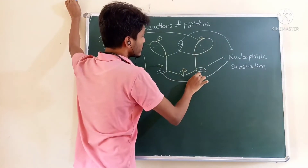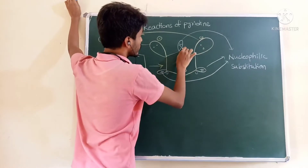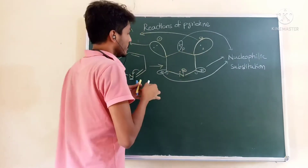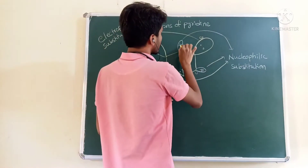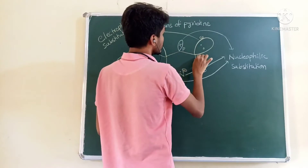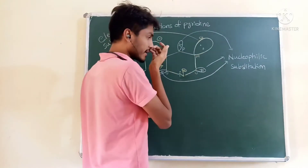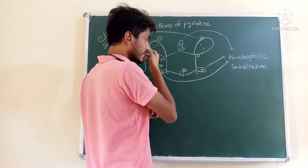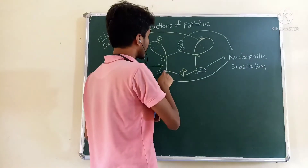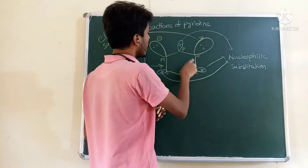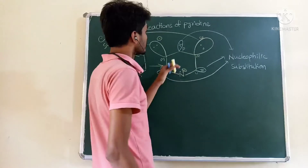This is the ortho position, this is the meta position, and this is the para position. Nitrogen decreases the electron density at the ortho and para positions.